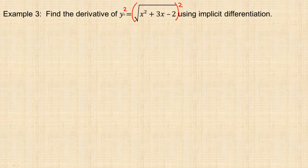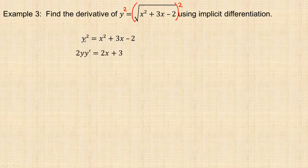If I square both sides, on the left I'll have y squared, and the square and the square root are opposite operations, so on the right I'm left with what was inside the radical: x squared plus 3x minus 2. Now performing implicit differentiation: the derivative of y squared is 2y — using chain rule — times the derivative of y with respect to x, which is y prime. The derivative of x squared is 2x, the derivative of 3x is 3, and negative 2 is a constant so its derivative is 0.